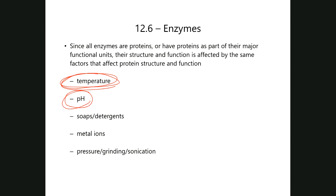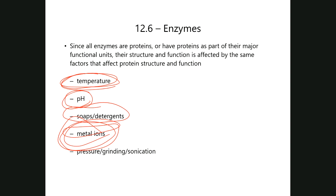Soaps and detergents can trickle into protein structures and destroy them. Metal ions — and here we're talking about harmful ones, or excess of even necessary ones — can accumulate and cause harm. Copper and iron in excess, for example, can accumulate in various places and cause harm instead of the benefit they provide in appropriate amounts. Trauma — stab wounds, gunshot wounds, motor vehicle accidents — can also cause denaturation of proteins.